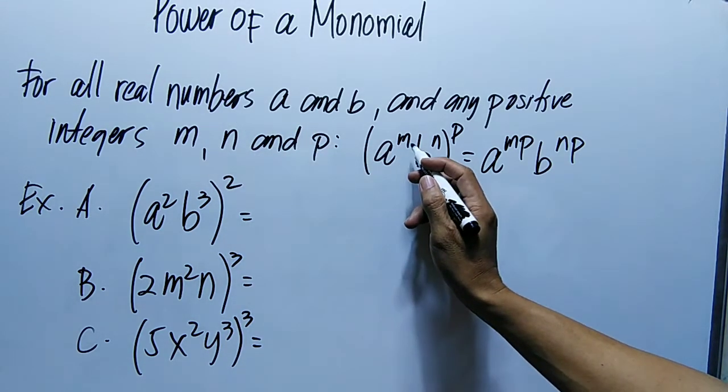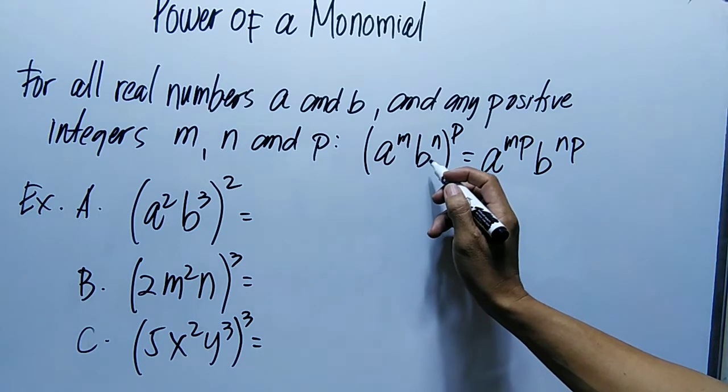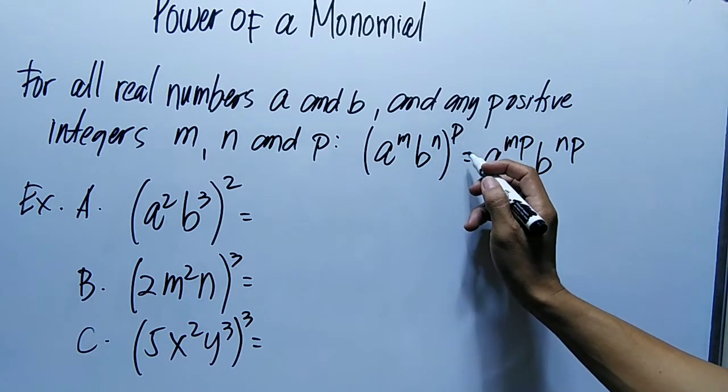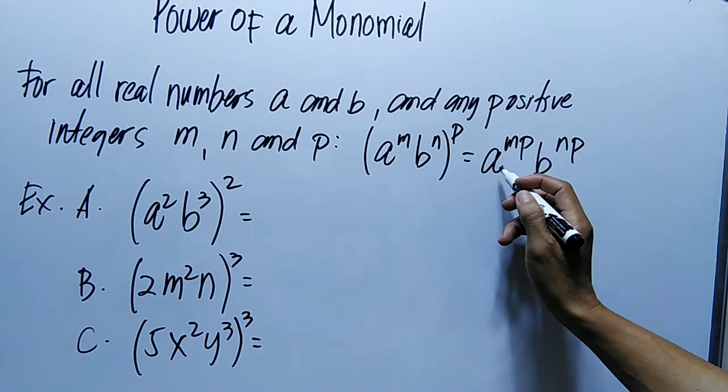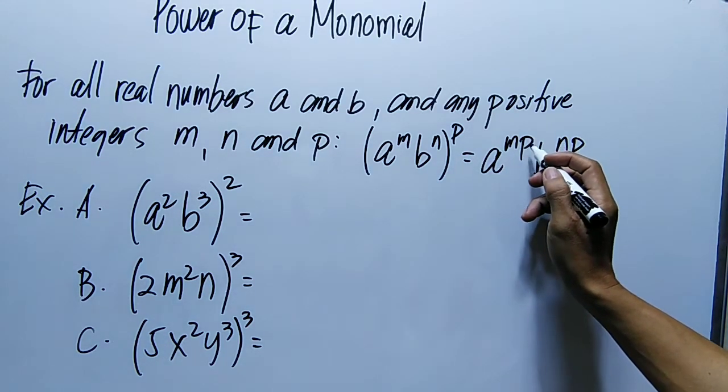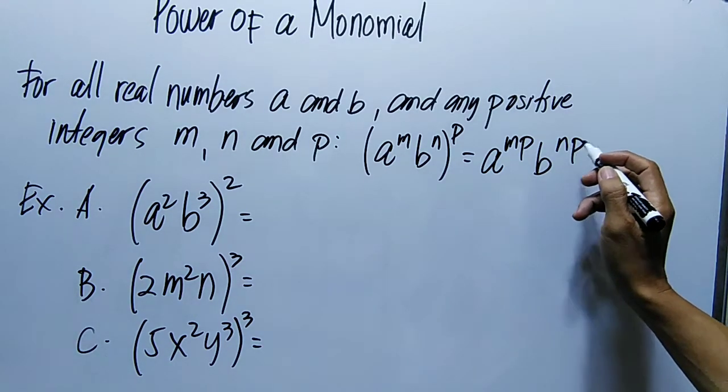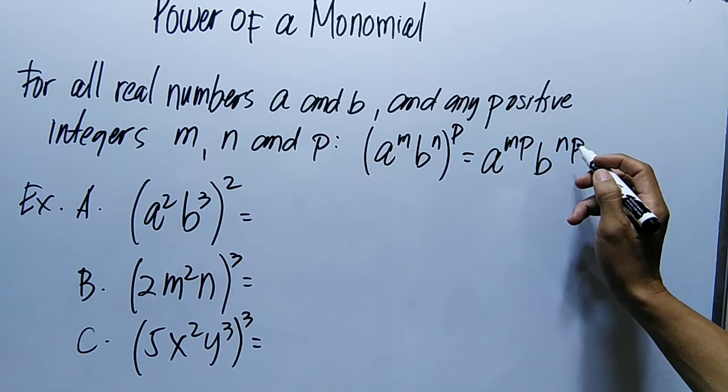the quantity of A raised to the power of M times B raised to the power of N, quantity raised to the power of P, that is equal to A raised to the power of M times P or MP times B raised to the power of NP or N times P.